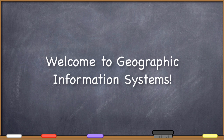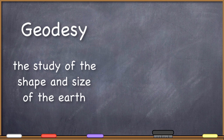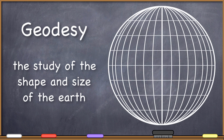Hello everyone, welcome to your first lecture in Geographic Information Systems. To start this off, we're going to have a basic lesson in geodesy. Geodesy is the study of the shape and size of the Earth. Since geographic information systems are concerned with geospatially referenced information, knowing the size and shape of the Earth is an important foundational component to geospatial technologies.